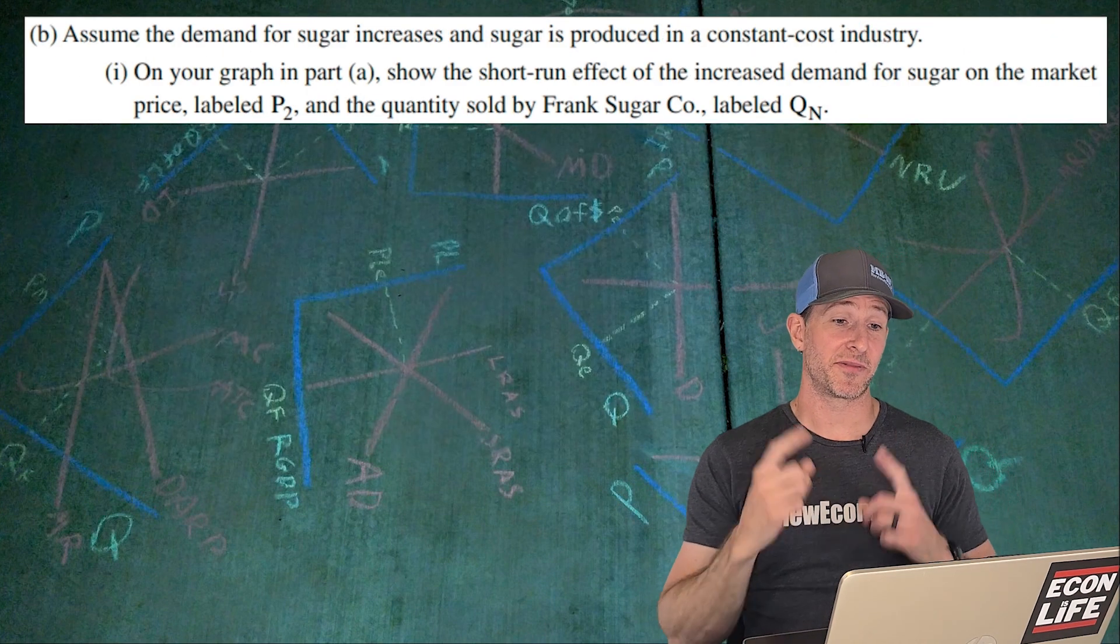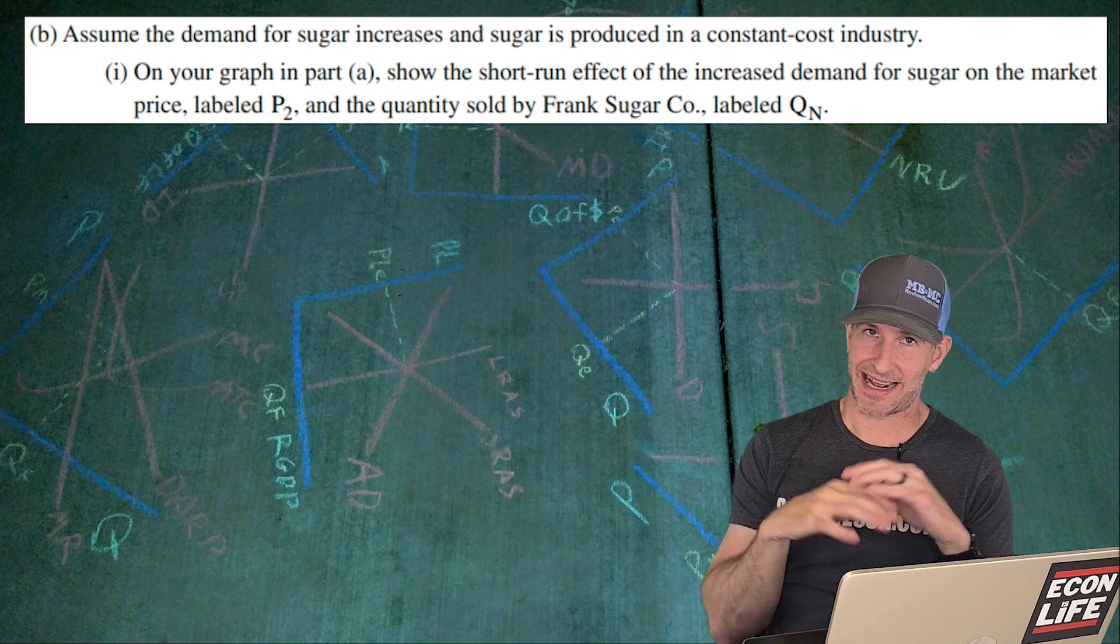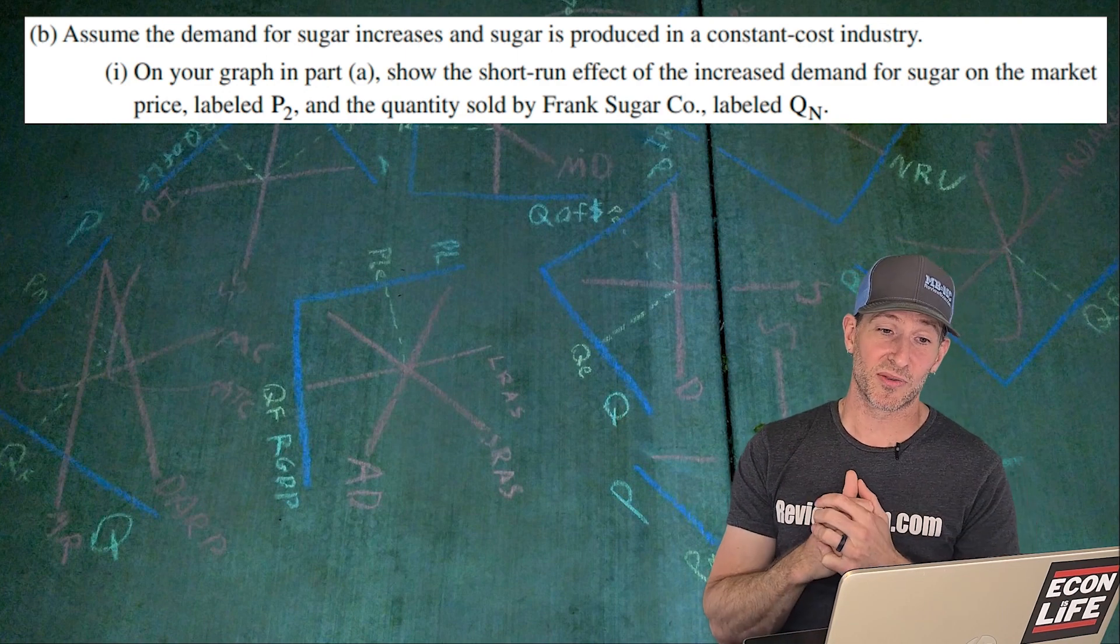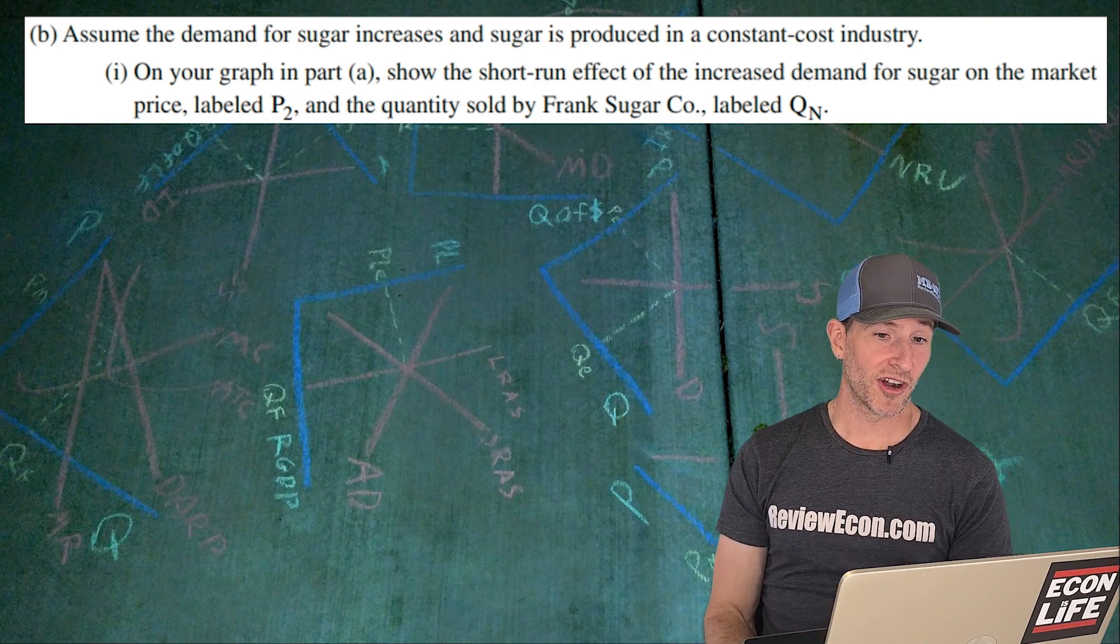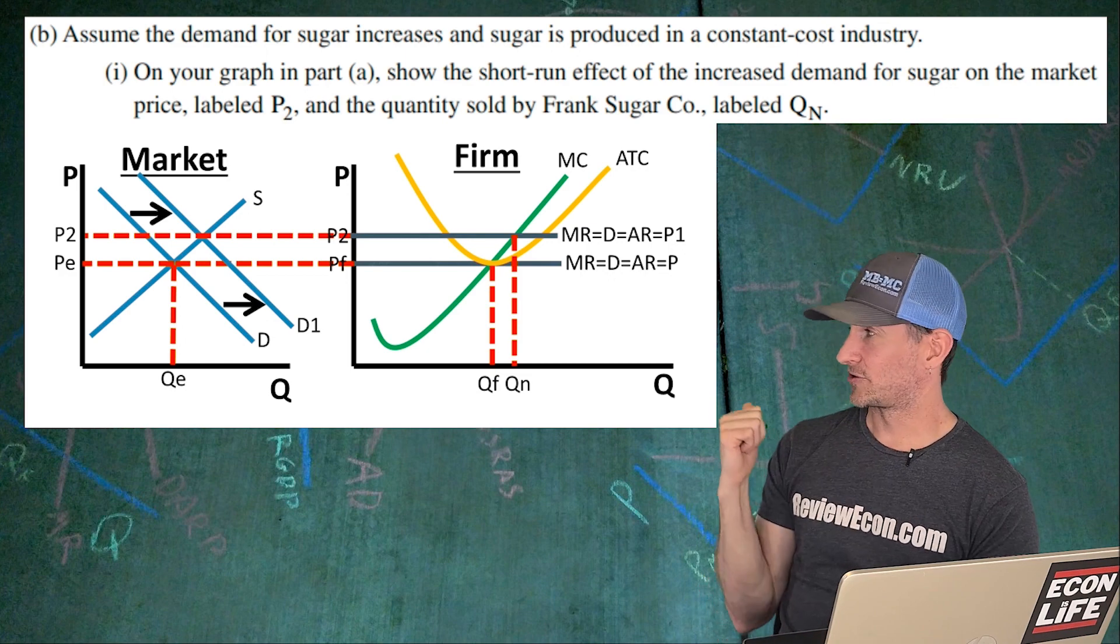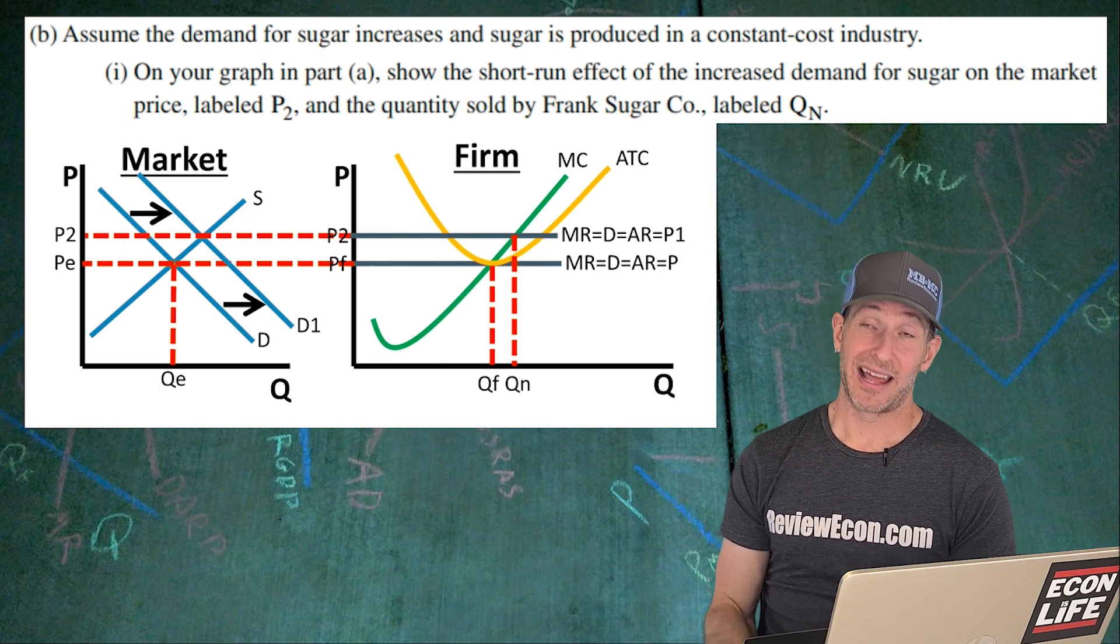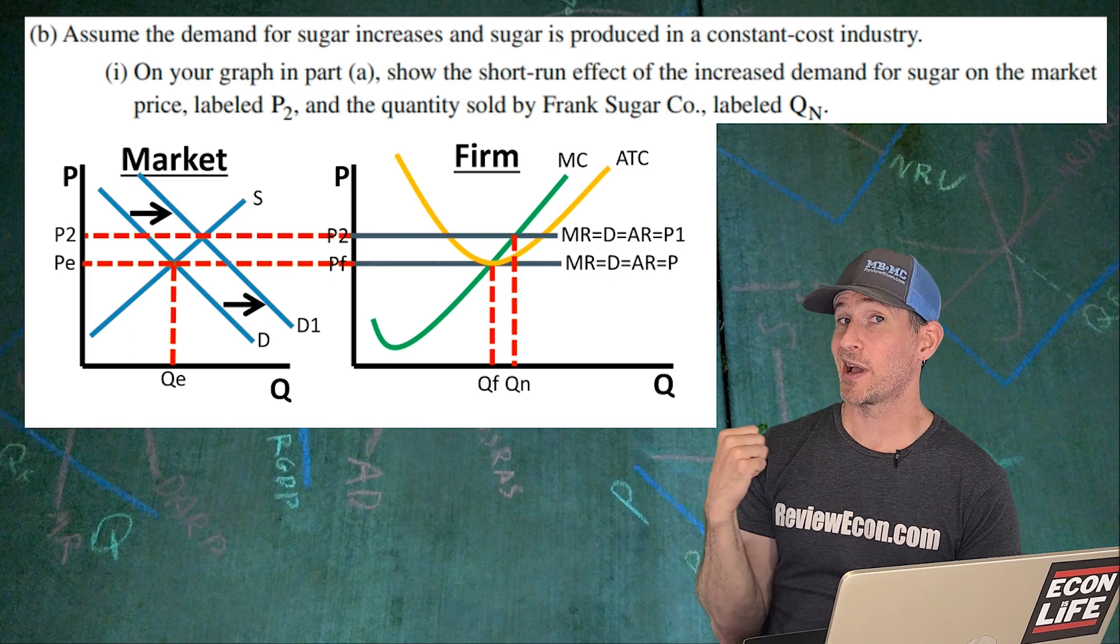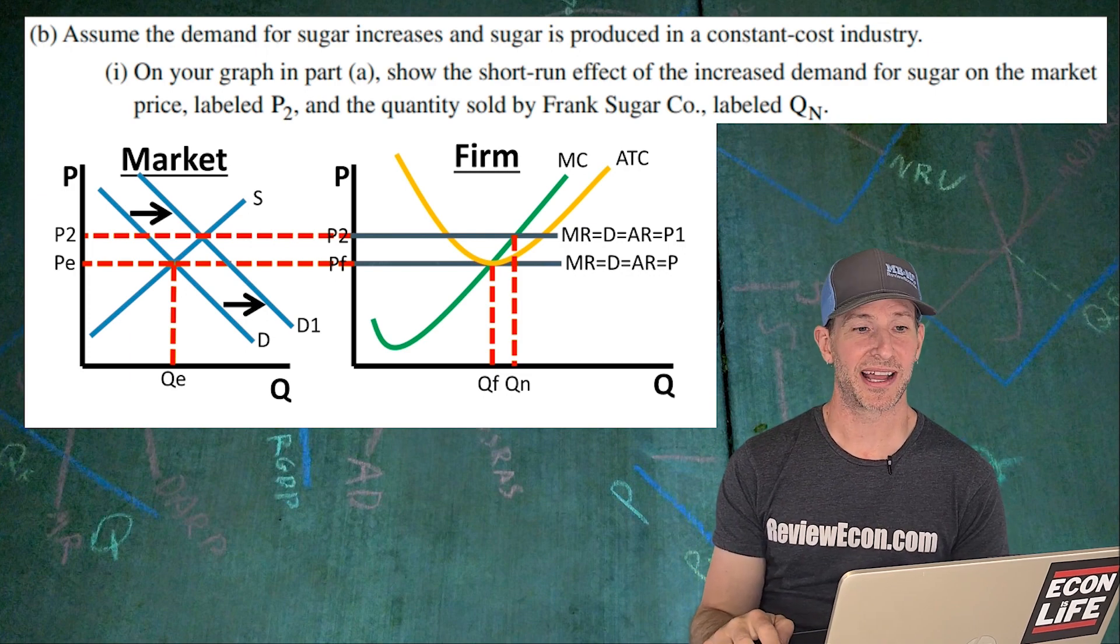Over on to B. The demand for sugar is going to increase, and it's a constant cost industry. That's just standard economics that we're learning here, so we don't have to make it complicated by moving the average total cost curves within the firm, and we're going to show the short-run effect of an increase in the demand for sugar on the market, and we're going to label the new price P2 and the new quantity for the firm as QN. Boom. There it is. We've got an increase in the demand, which increases the price, driving the marginal revenue demand curve up for the firm as well. We have a higher quantity, profit-maximizing quantity of QN, and that new quantity belongs in the firm graph, not the market graph. If you mark the market new quantity, that's fine, but QN actually belongs there with the firm. Now, you can see they're actually earning economic profits, although you didn't have to actually shade in those economic profits.